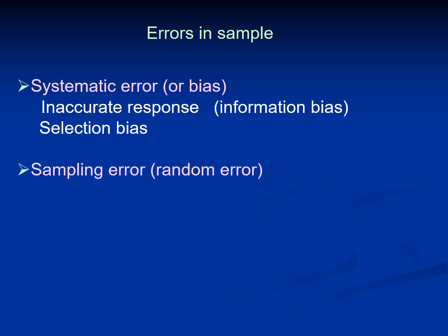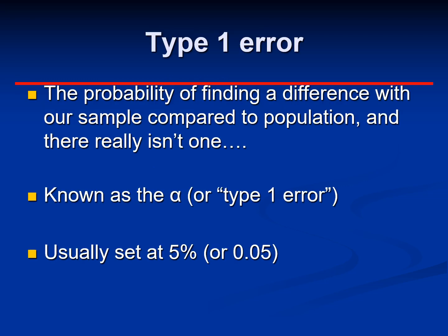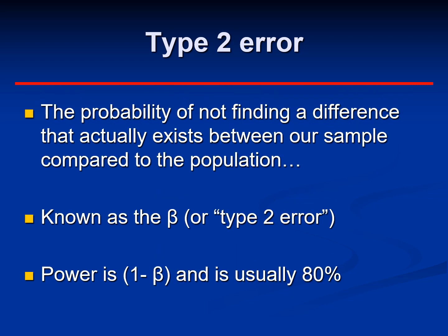We can have errors in samples and must minimize them. Systematic errors include bias, inaccurate responses, and selection bias. Sampling error is a random error. Type 1 error is the probability of finding a difference with our sample compared to the population when there really isn't one — known as alpha, usually set at 5%. Type 2 error is the probability of not finding a difference that actually exists — known as beta. Power is 1 minus beta and is usually pegged at 80%.